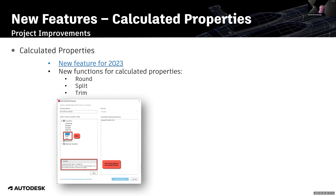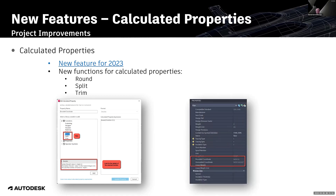You also get a description. As an example, I am creating a property called 'rounded coordinate': round bracket, then the property position X with a precision of 1. I have also created another property called 'unrounded coordinate' — position X as well but without the round function. The rounded coordinate looks much nicer than the other one. A small functionality but with a big impact.